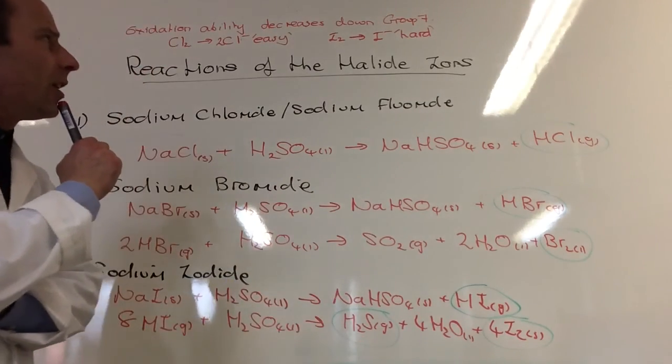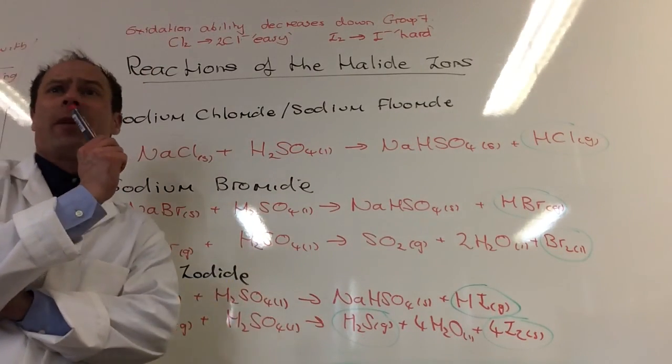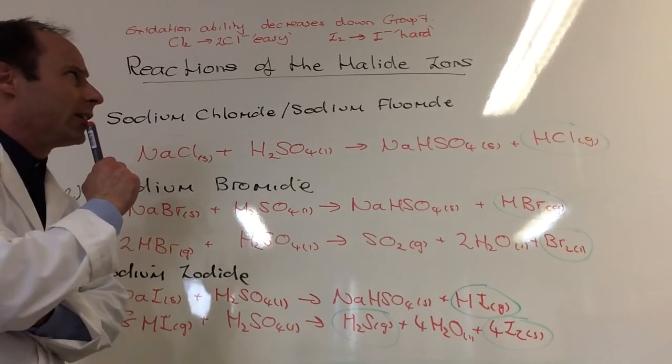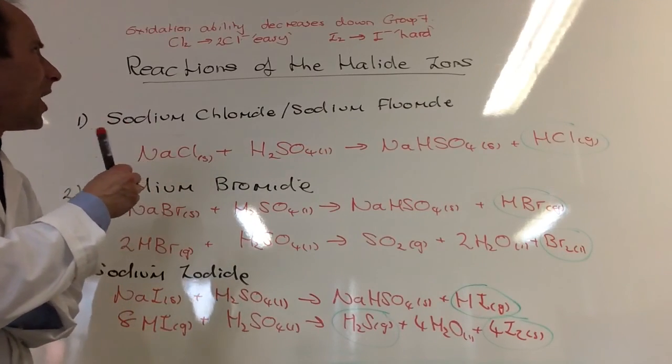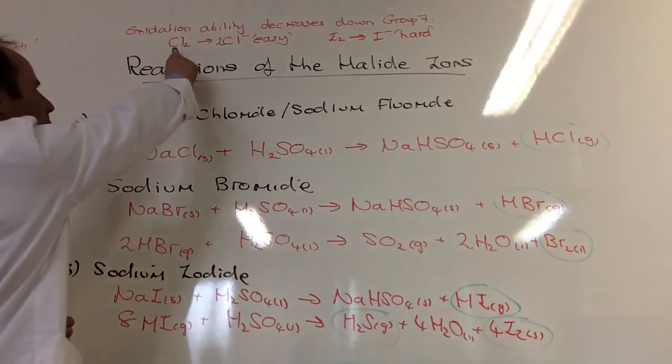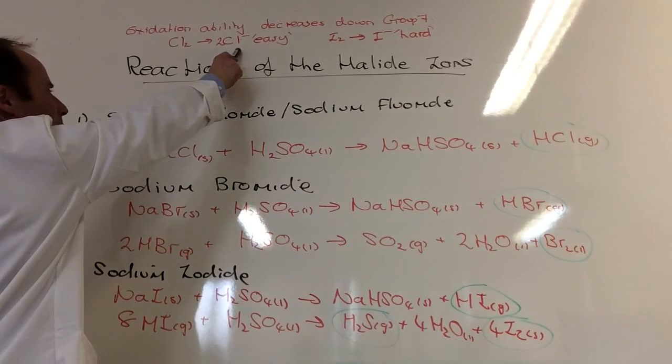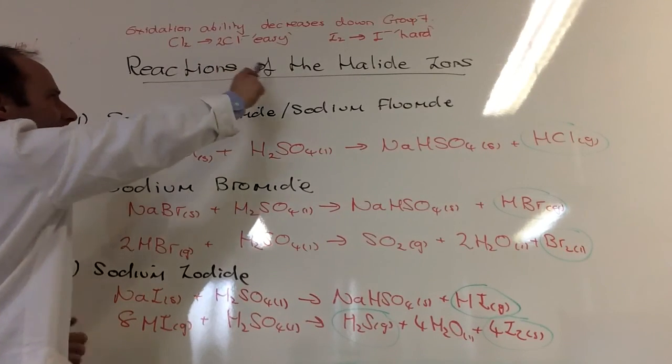So last time, we were looking at displacement reactions of the halide ions, and we said that chlorine wants to become chloride ions, that's quite easy.